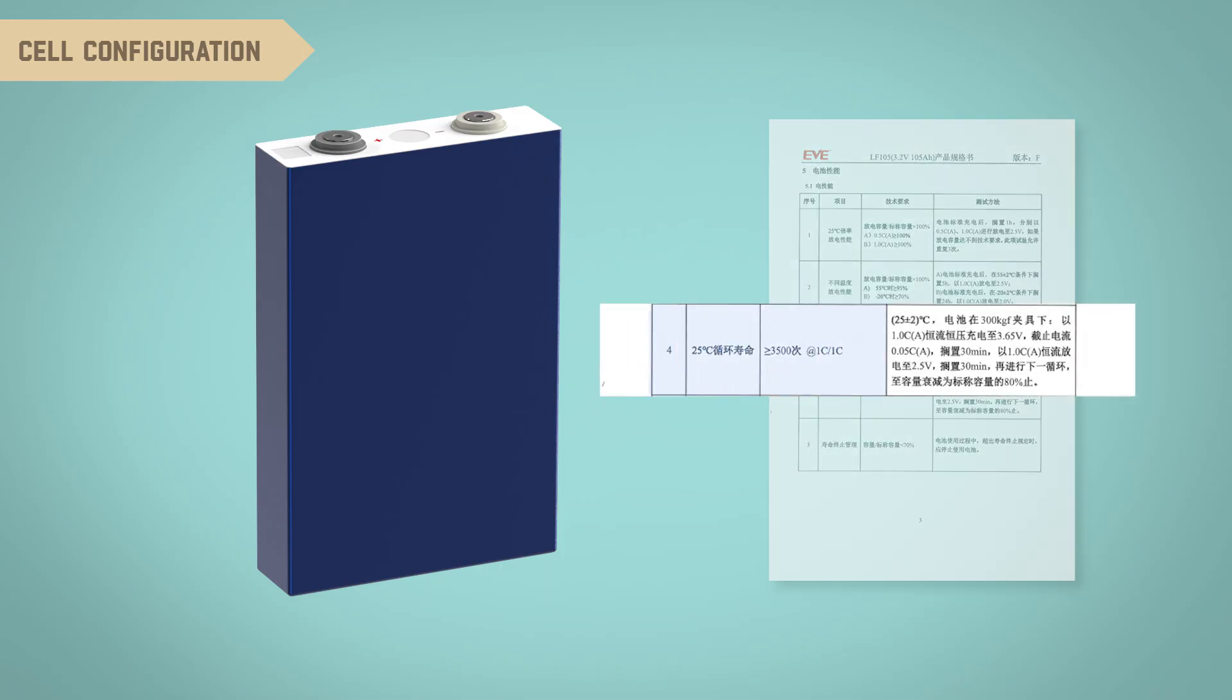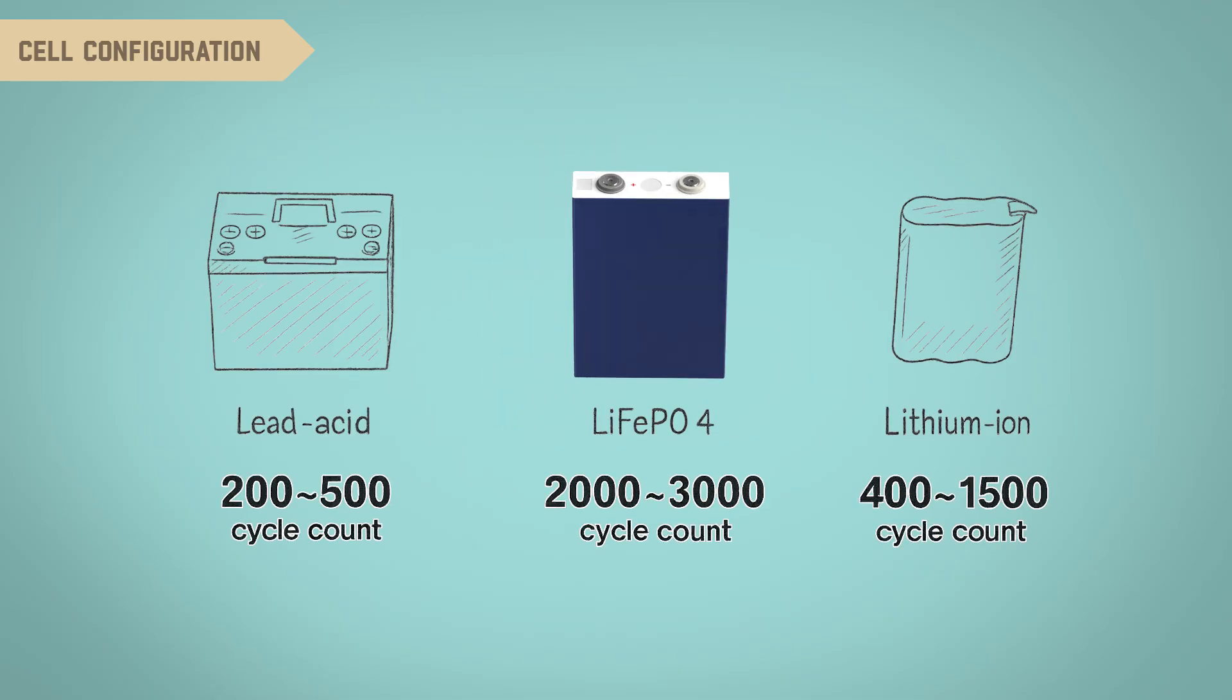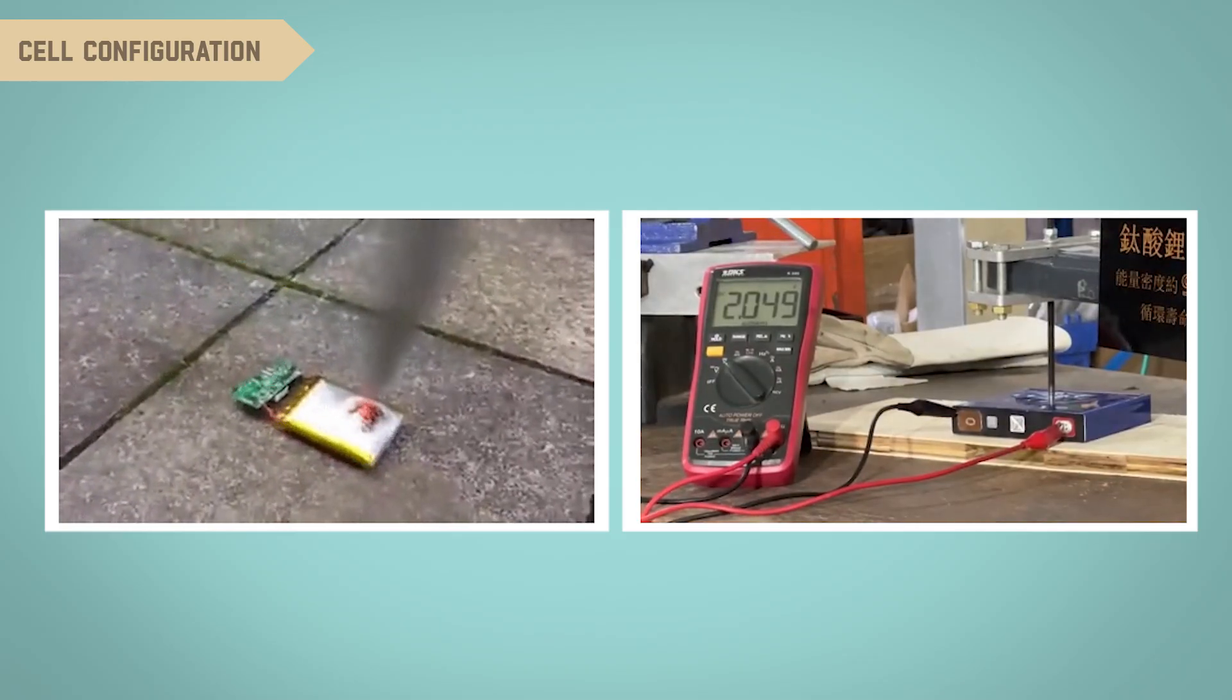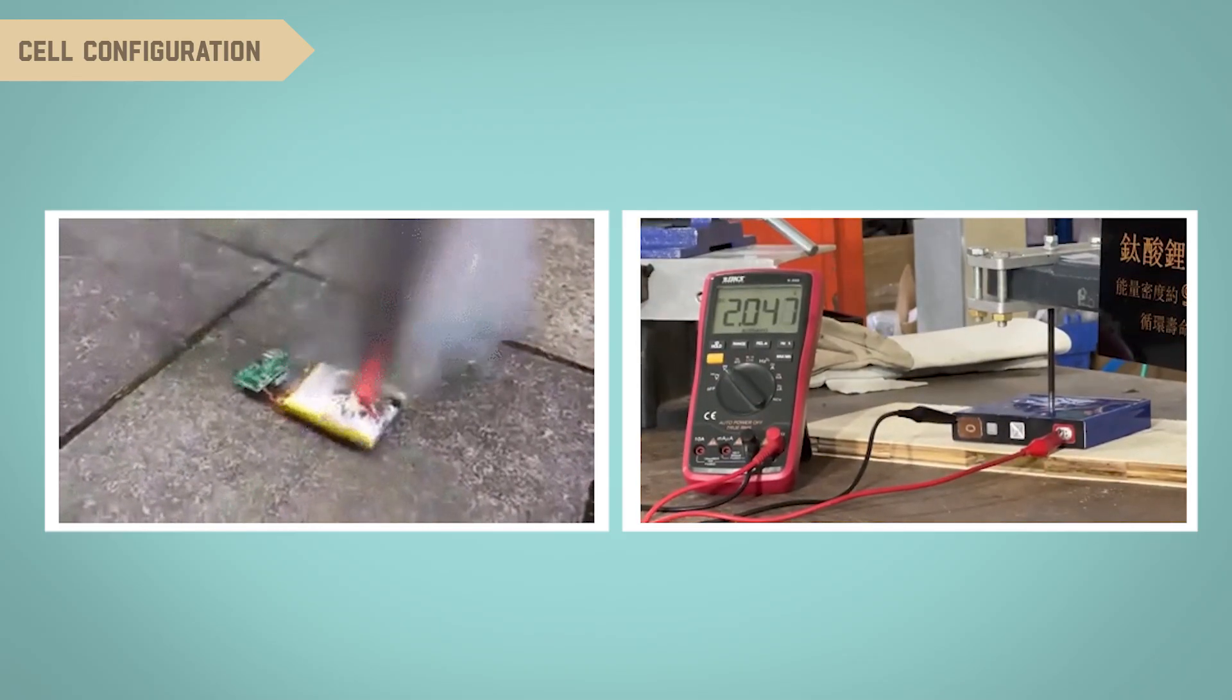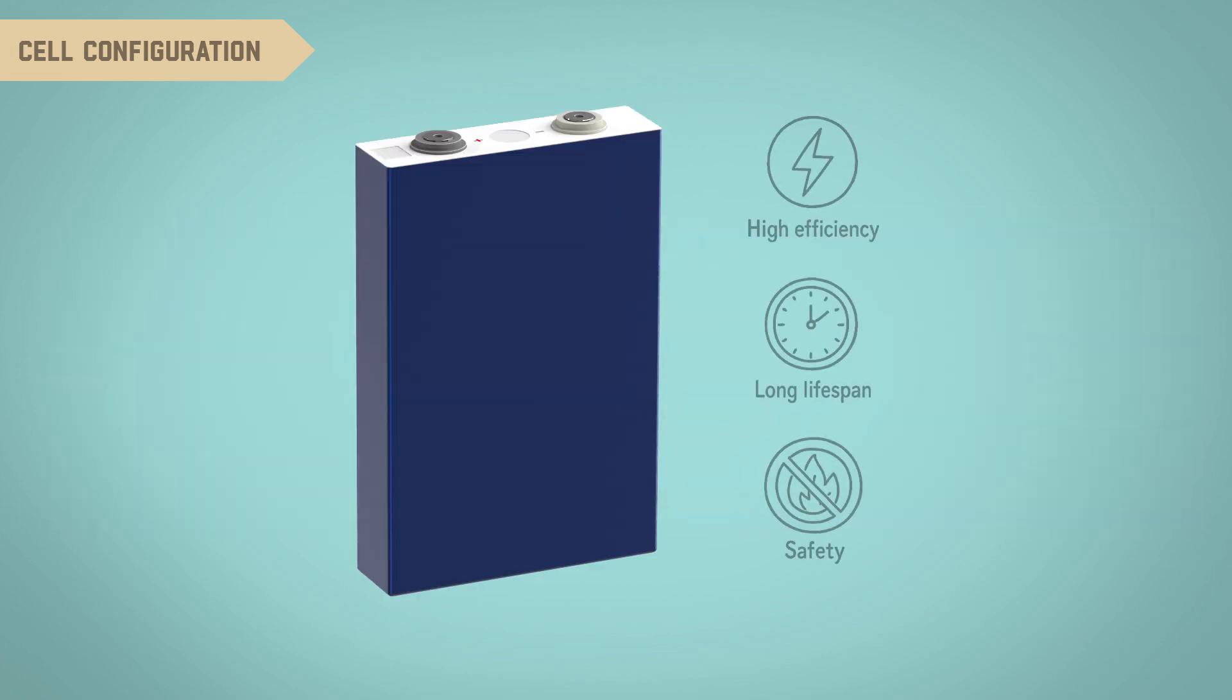In addition, they can withstand over 2,000 charge cycles while maintaining up to 95% depth of discharge. Compared to lead acid or lithium-ion batteries, they offer a lifespan of up to 20 years. More importantly, they don't contain flammable materials like some lithium-ion batteries do, reducing the risk of explosion. This makes them a much safer option.